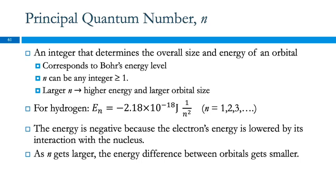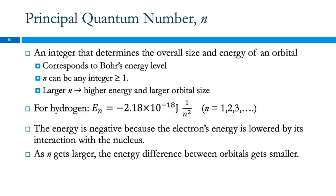For hydrogen, we can calculate the energy of an electron. The energy of the electron in level n is equal to minus 2.18 times 10 to the minus 18th joules times 1 over n squared. Whatever n is — 1, 2, 3, et cetera — you stick it in there, you square it, you do the math, and you figure out the energy of the electron.